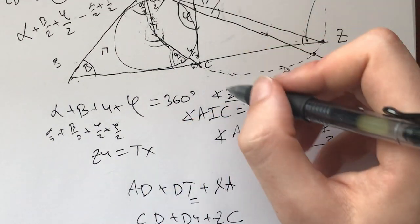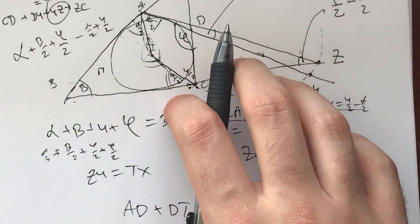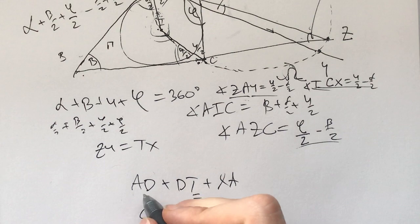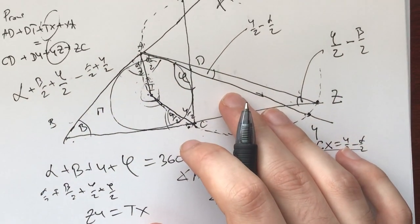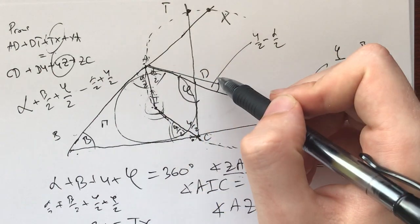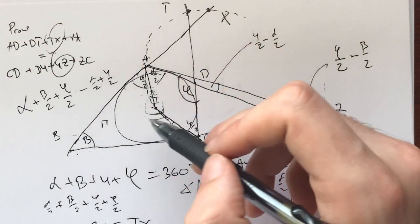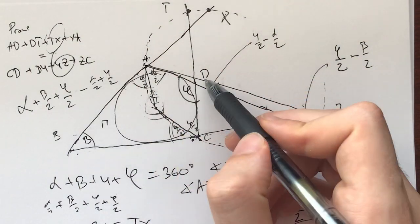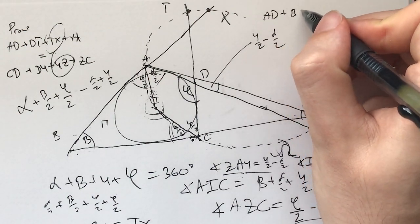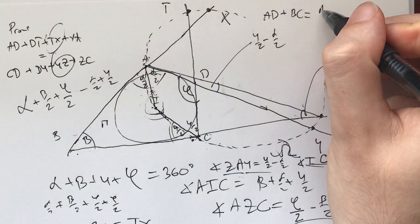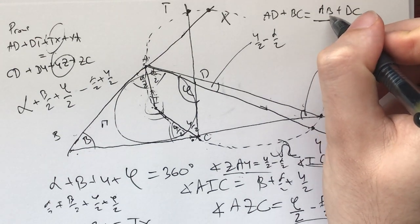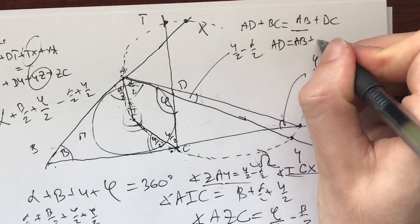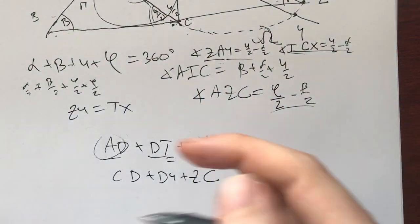And now we can immediately just forget about these things and focus on the rest of the problem, which is what we have. We have AD plus DT plus XA needs to be equal to CD plus DY plus ZC. I invite you maybe here to pause for another 5 to 10 minutes and try to push the problem further yourself. For me, the next push was: we have AD plus DT plus XA. Let me see what that is. I know this is a tangential quadrilateral.